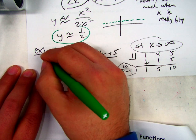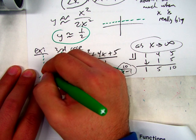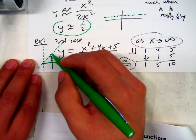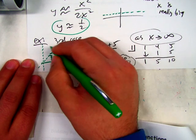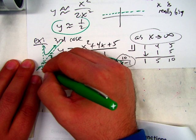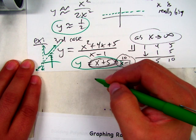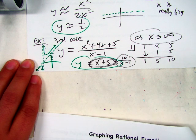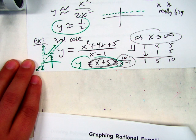You'd probably have something like this — you'd have to have a vertical asymptote, and then the graph curves around it. When we do a couple of these examples it'll get cleared up. There's just a lot of details. Let's go to page 10.